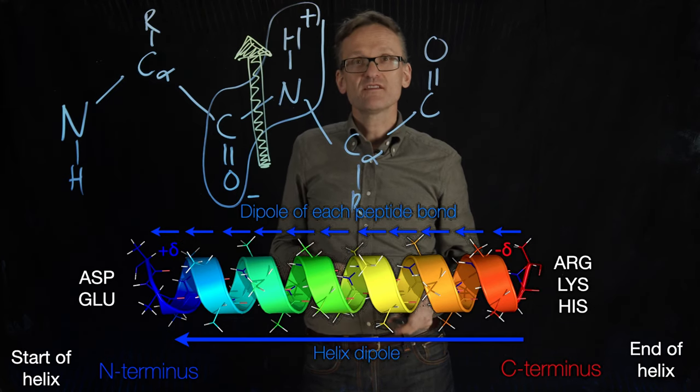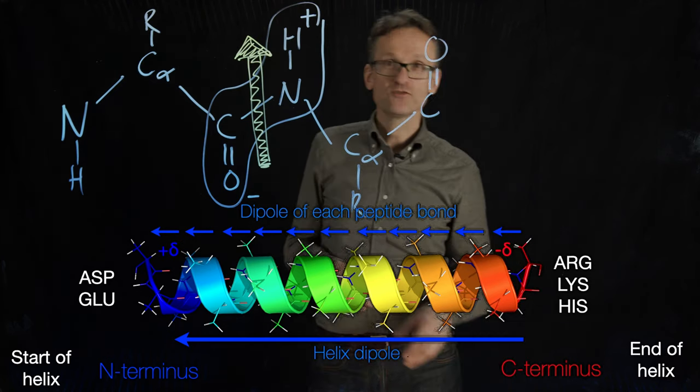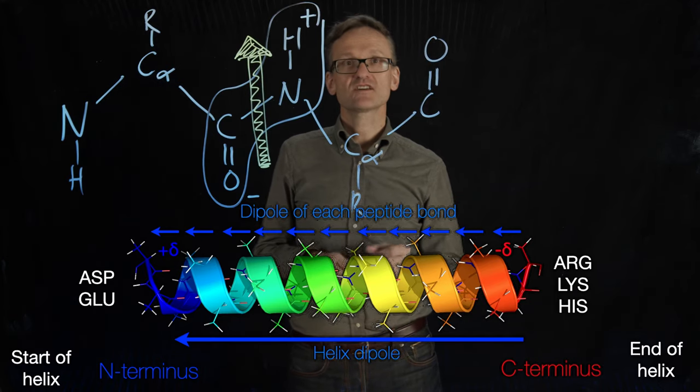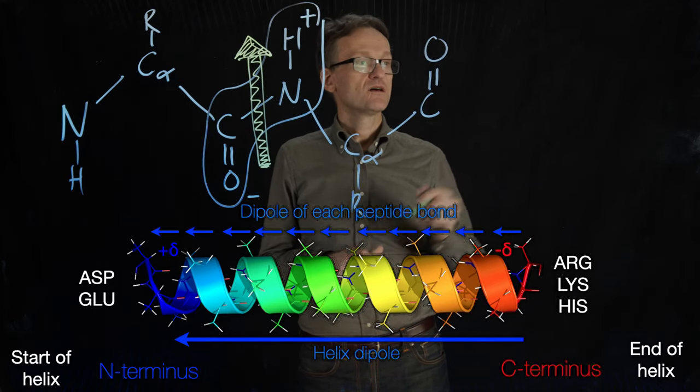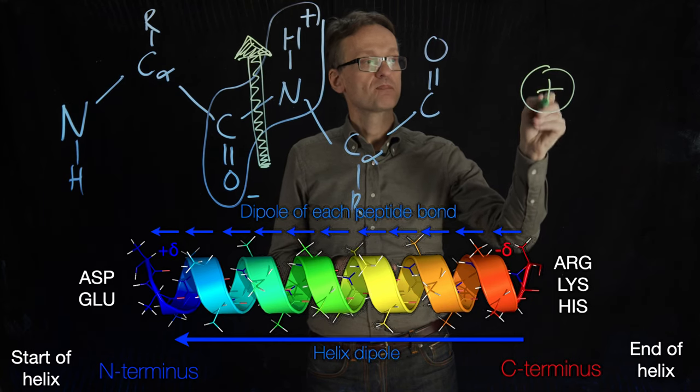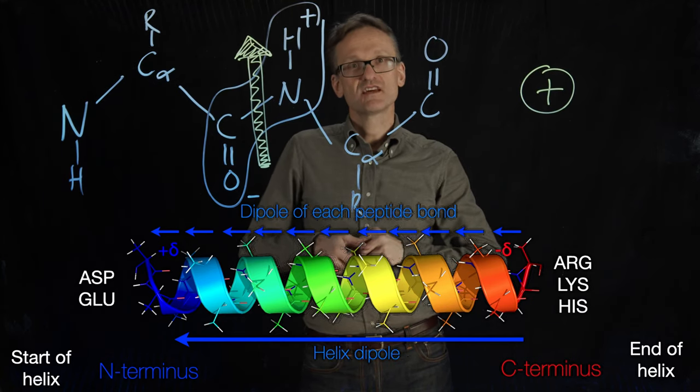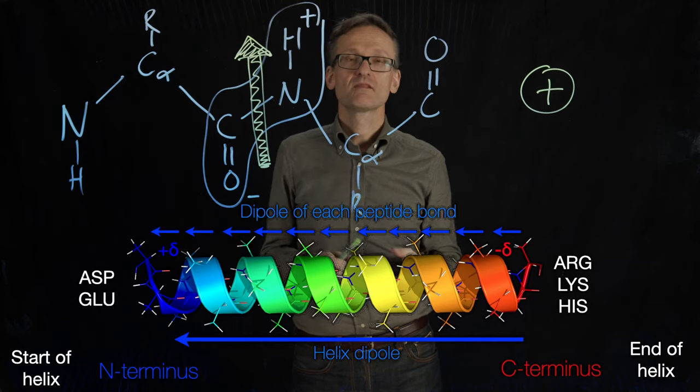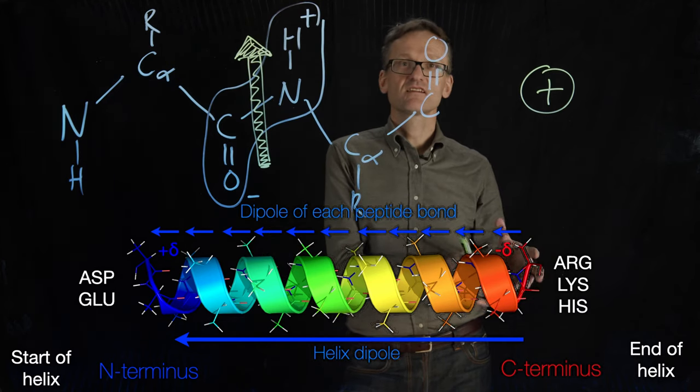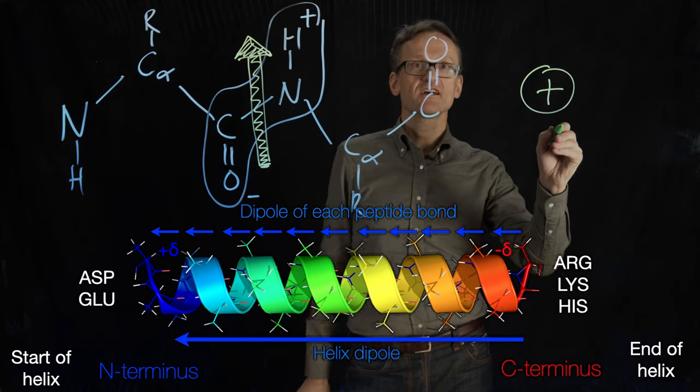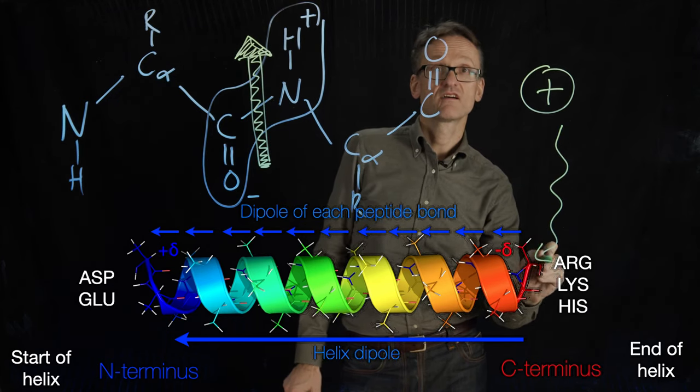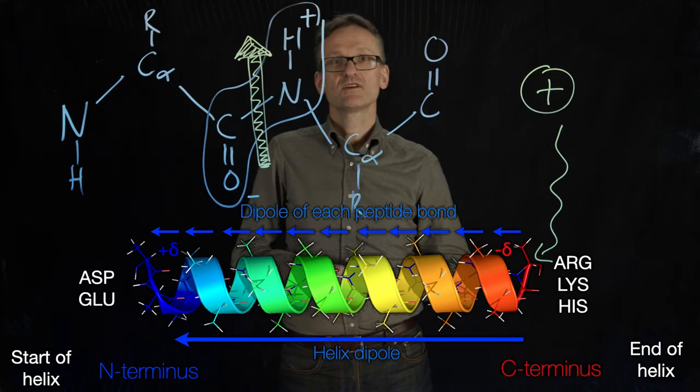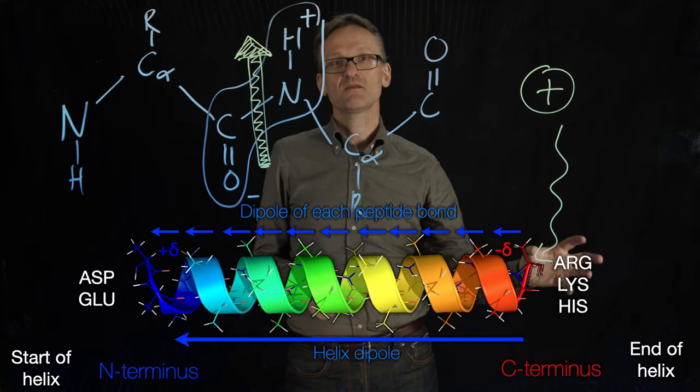But this is used for other things. What if you were nature and you needed a protein that should bind a positive ion? Could you imagine any motif that would help you stabilize a positive ion? Maybe this part of the helix, right? Because if this positive ion were to go here, it would interact with the dipole and be stabilized.